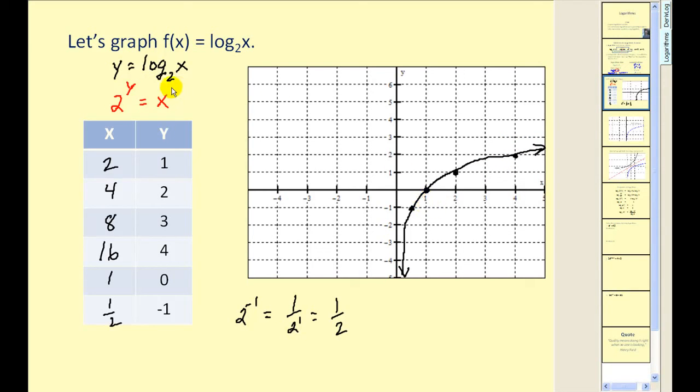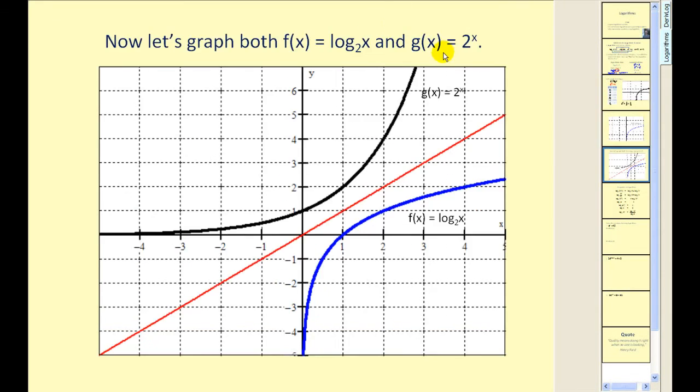And at this point, I think it's going to be helpful for us to compare the graph of this logarithmic function with base two to the exponential function of base two. So here we have in blue our log function and in black we have our exponential function. And I've also graphed the line y equals x. And what this shows is they're symmetrical across the line y equals x. And that's because they're inverses of one another. Notice how this has a y intercept of positive one. The blue graph has an x intercept of positive one. And they're symmetrical across the line y equals x. So log functions and exponential functions are inverses of one another.